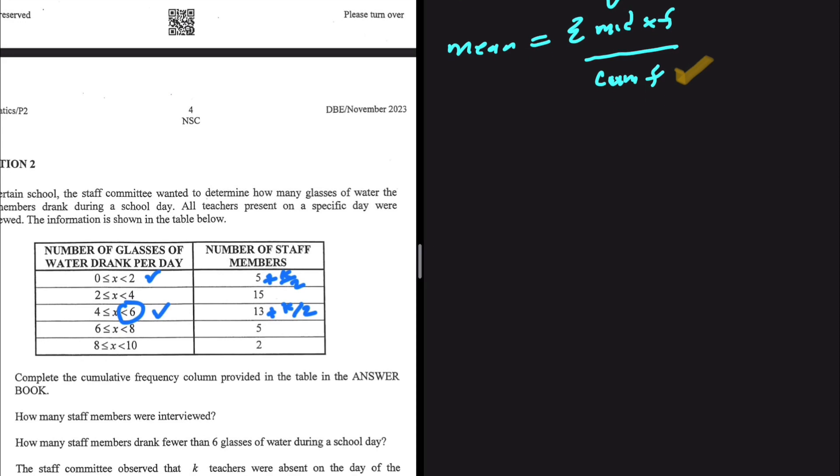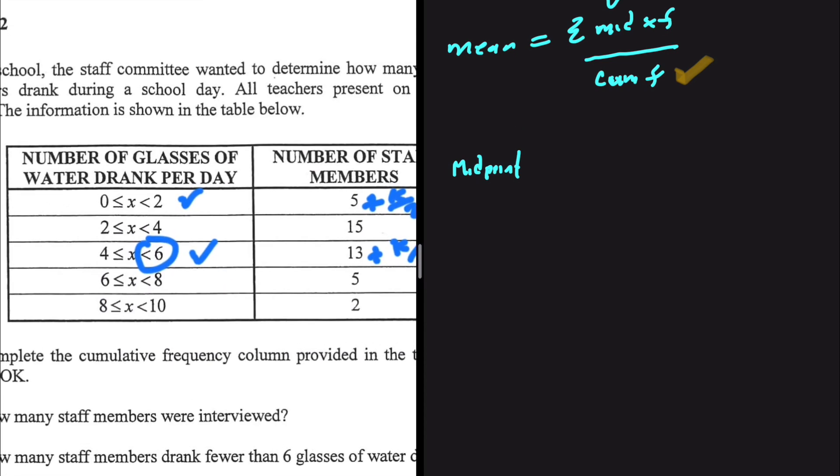Let's find the midpoint. So the first step is to find the midpoint. What is the midpoint of 0 to 2? That is 1. The midpoint of 2 to 4 is 3, that of 4 to 6 is 5, of 6 to 8 is 7, of 8 to 10 is 9. So that is the midpoint.